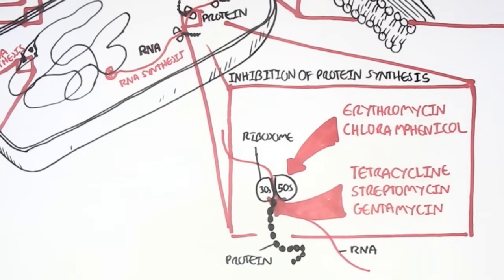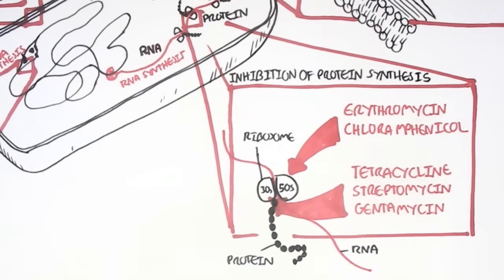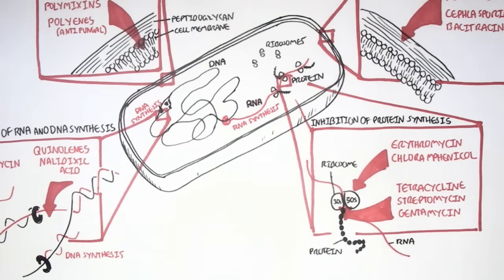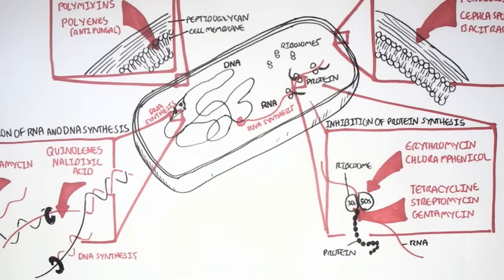Either way, this will disrupt the ribosomes from making proteins, which will result in the bacteria unable to make proteins, so the bacteria is pretty much useless. The bacteria can still be alive, but it just is unable to make anything. These antibiotics that target protein synthesis are bacteriostatic. They prevent bacterial growth.